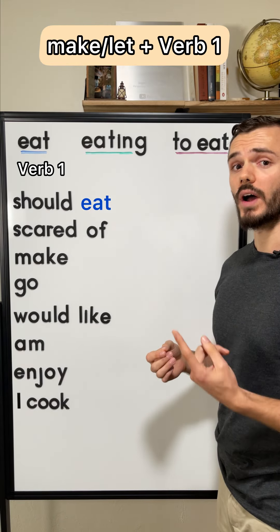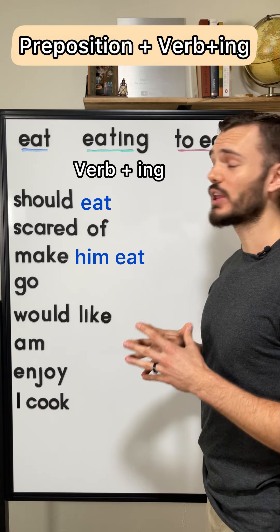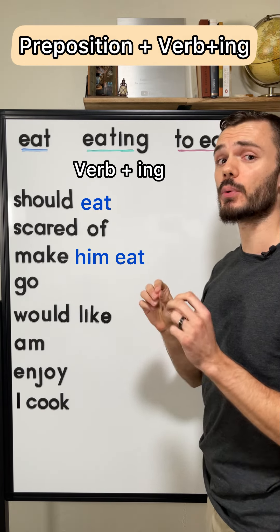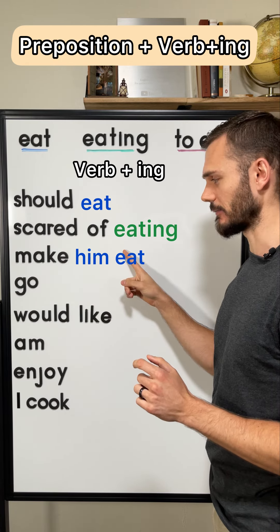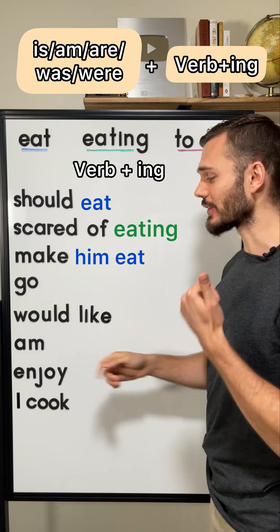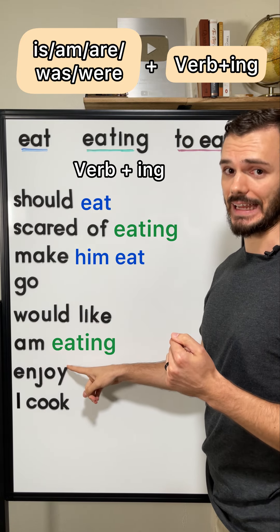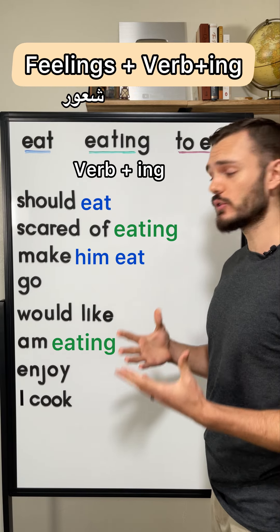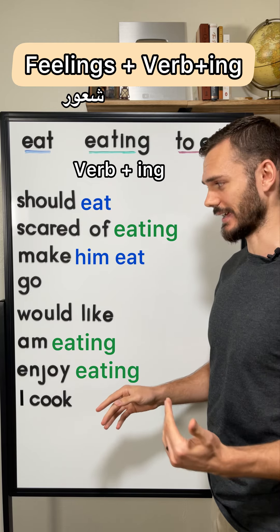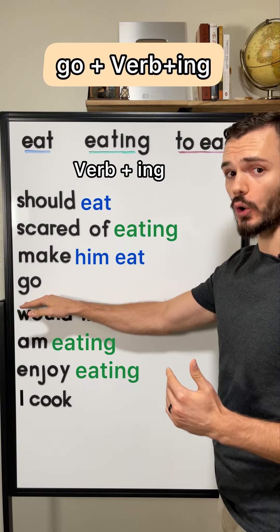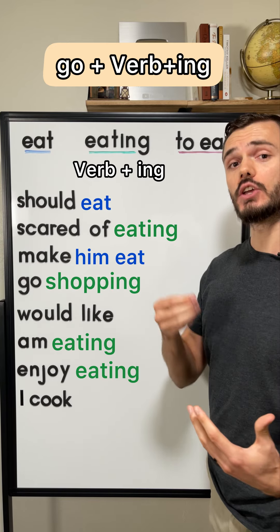We also use verb 1 with 'let' and 'make' — for example, 'make him eat'. We use verb-ing after prepositions — 'I'm scared of eating'. We also use it after 'is', 'am', 'are', 'was', 'were' — so 'I am eating'. And we use it after feelings — 'I enjoy eating', 'I hate eating' — and after 'go' with some activities, like 'I go shopping', 'she goes running'.